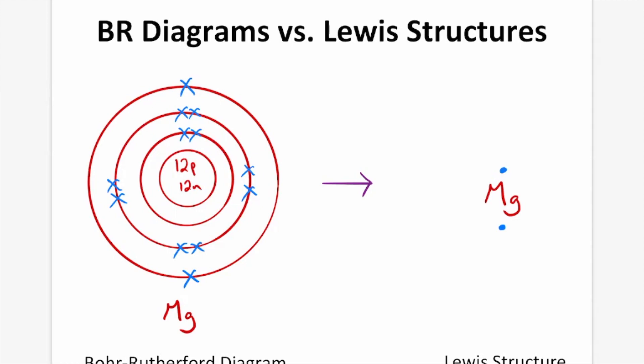You can see that magnesium in our Bohr-Rutherford diagram has all these orbits — one, two, three orbits — and all the electrons found in those orbits. Whereas the Lewis structure simply has the two valence electrons. The difference in the drawing is we have the symbol Mg and the two valence electrons, one and two.